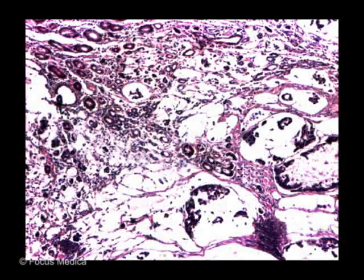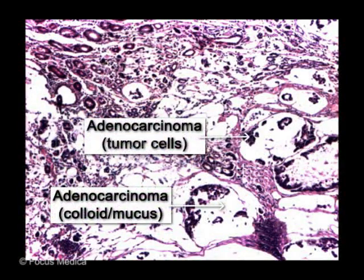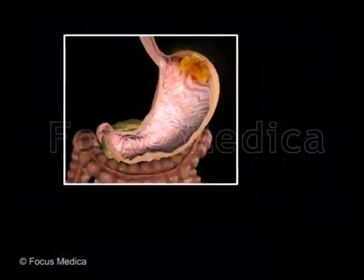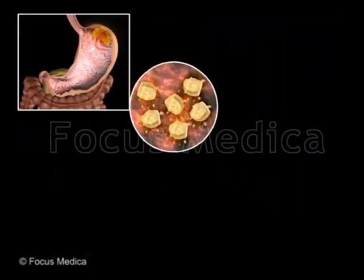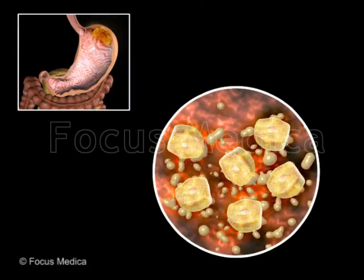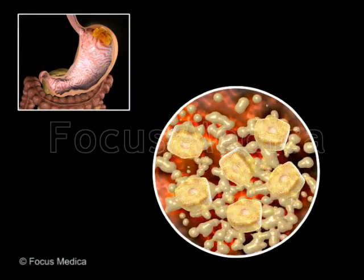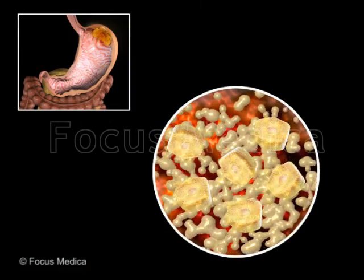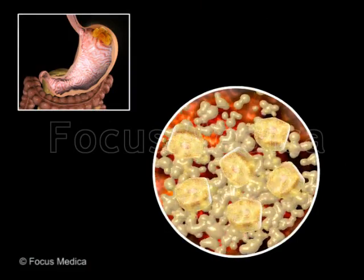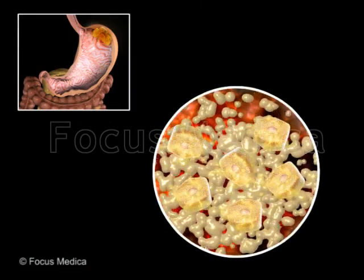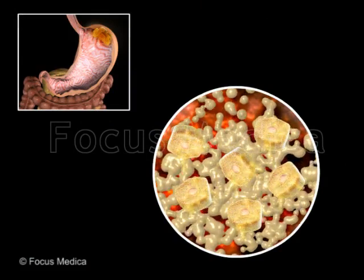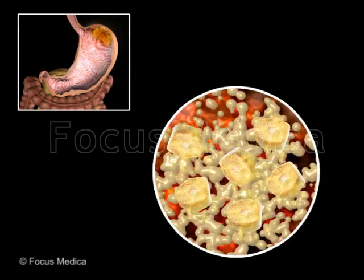Histologically, diffuse-type adenocarcinoma contains gastric mucus cells that produce and secrete mucus, which collects in the interstitium, giving rise to mucinous adenocarcinoma.